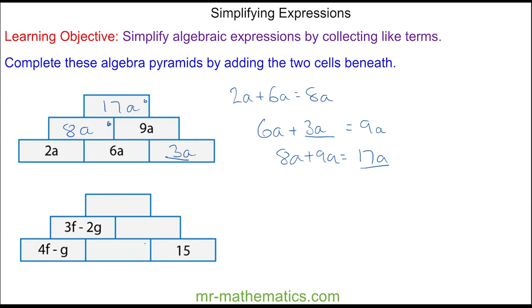Finally, we'll work out this cell where we have 4f minus g plus something equals 3f minus 2g. We need to take away one f from 4f, so this will be minus f. We need to take away another g to make negative 2g, so here we have minus f minus g. For this cell, it will be the sum of the two beneath it, which is 15 minus f minus g. Finally, we have 3f add a negative f, which is 2f.